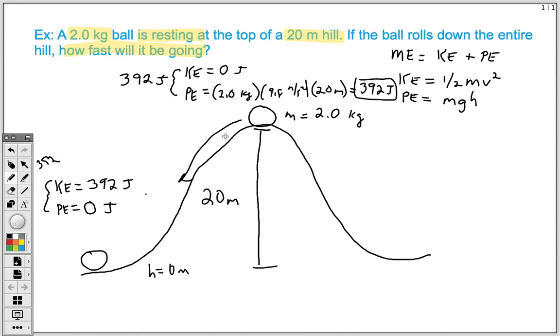So all of our potential energy has now transformed into the kinetic energy. That's half of the problem right there. Now what we want to do is solve for how fast. Keep in mind, our kinetic energy equation here, we can solve for how fast because of our velocity squared in the problem. So if our KE is equal to 392, let's go ahead and plug that in. 392 is equal to one-half the object's mass, which is 2.0 kilograms, times the velocity squared.